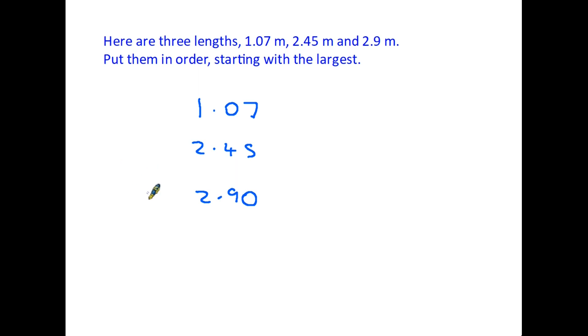Let's have a look at putting these three in order. The first thing that we do is have a look at the whole numbers, which we know is this column here. So we have a one, a two, and a two. We know that the largest number must be one of these with two as a whole number.